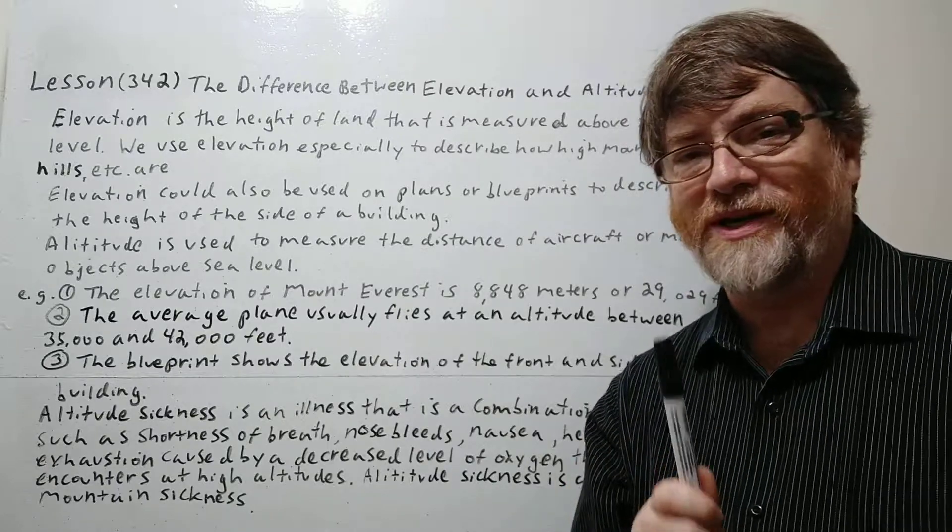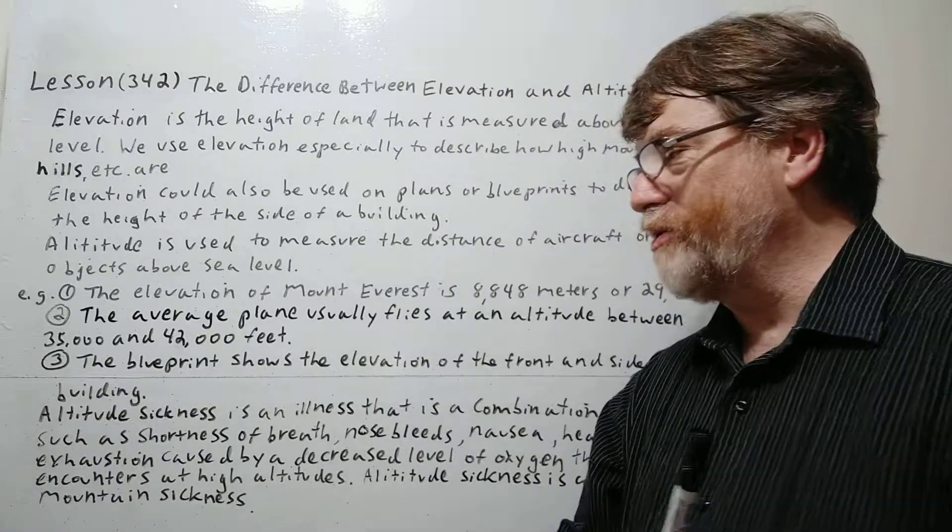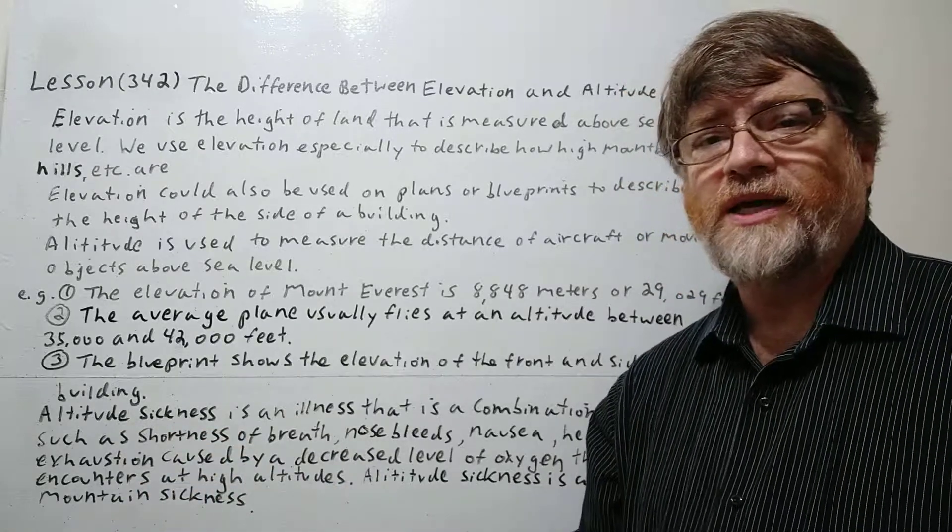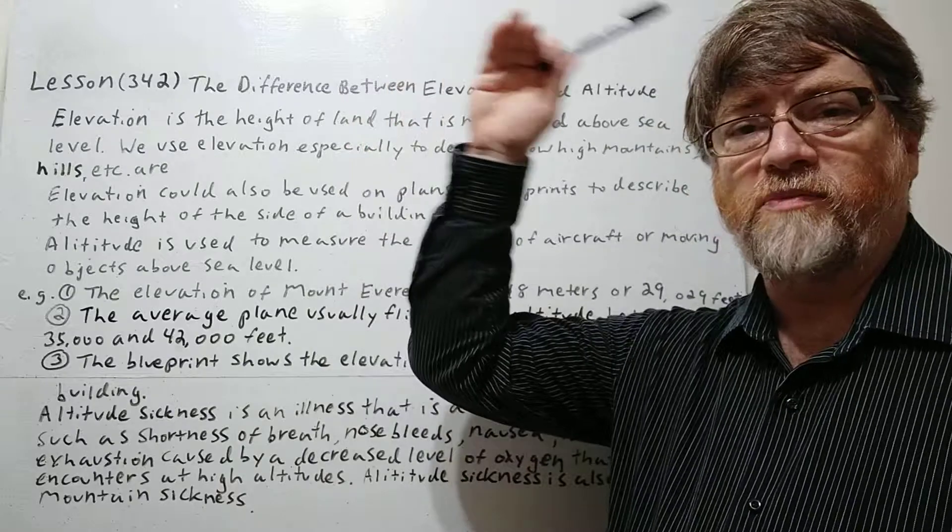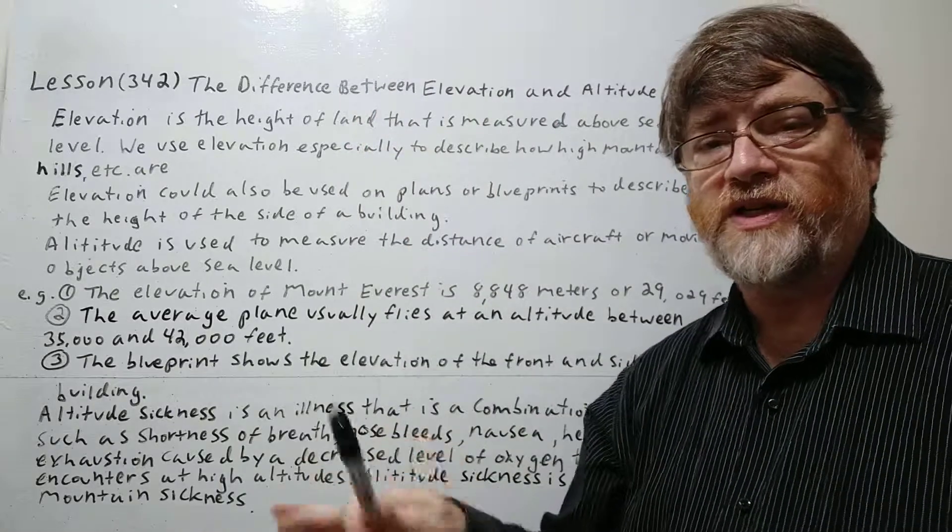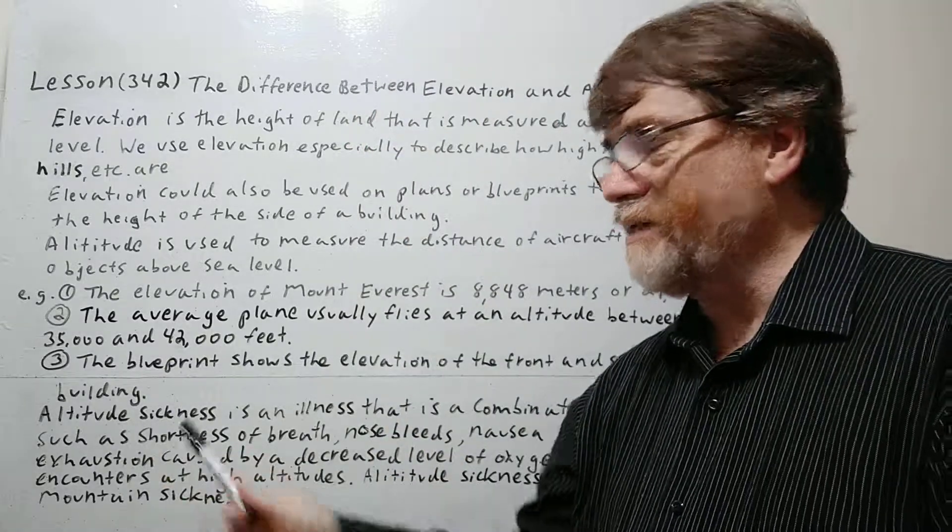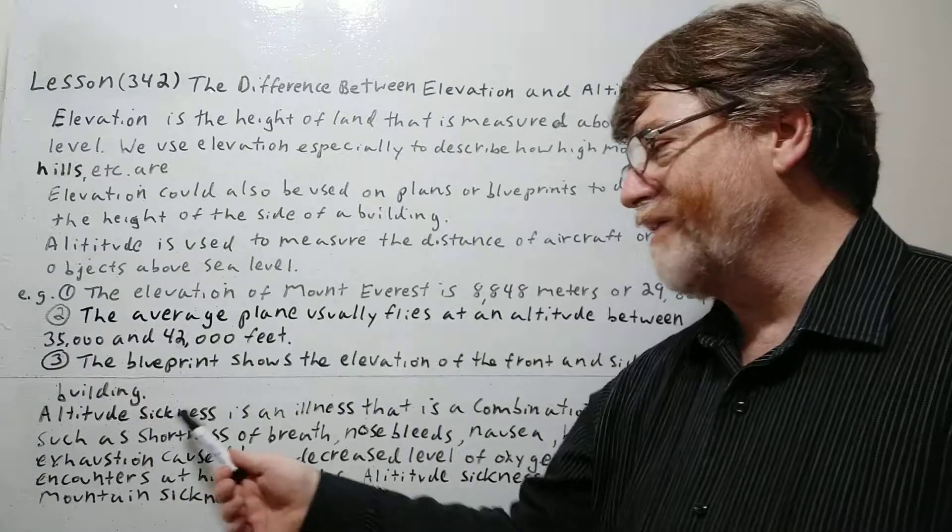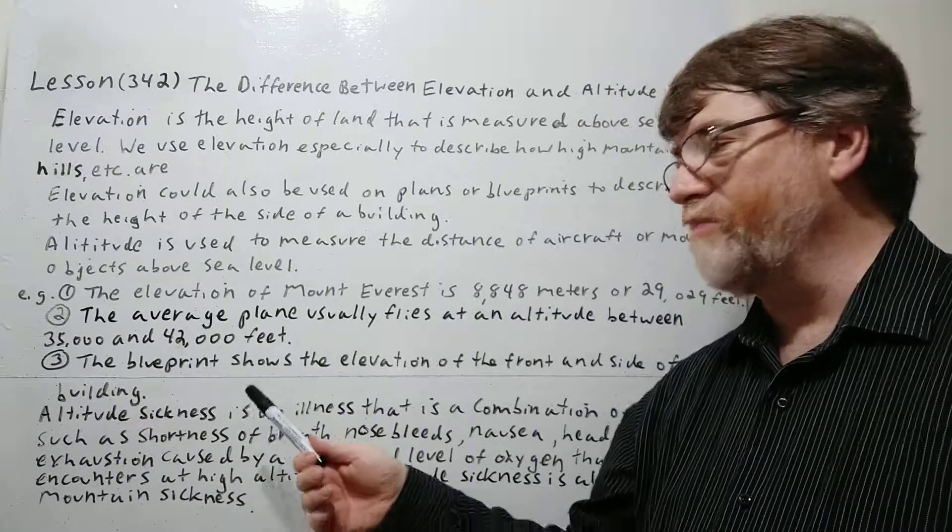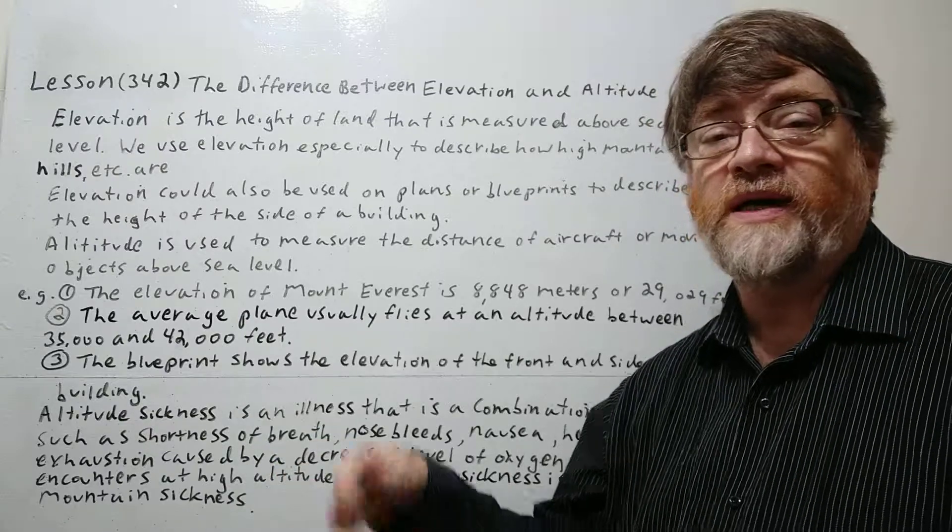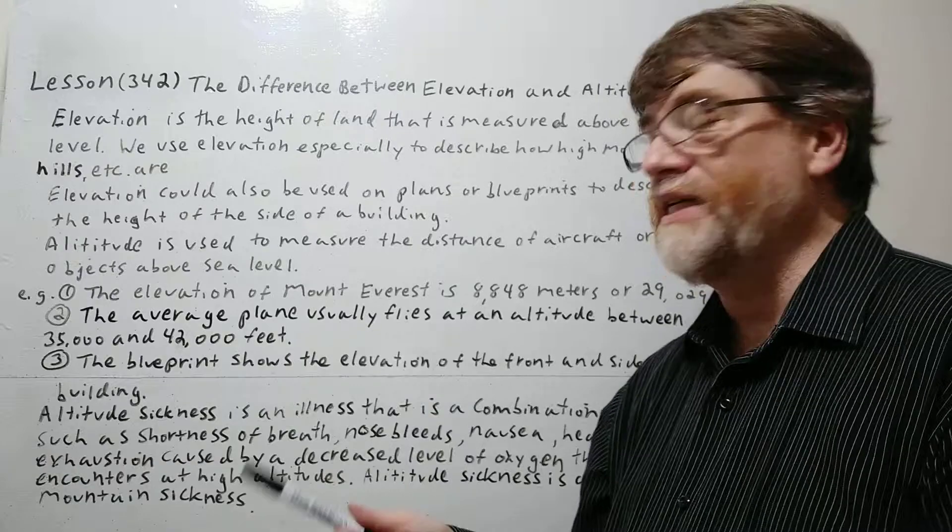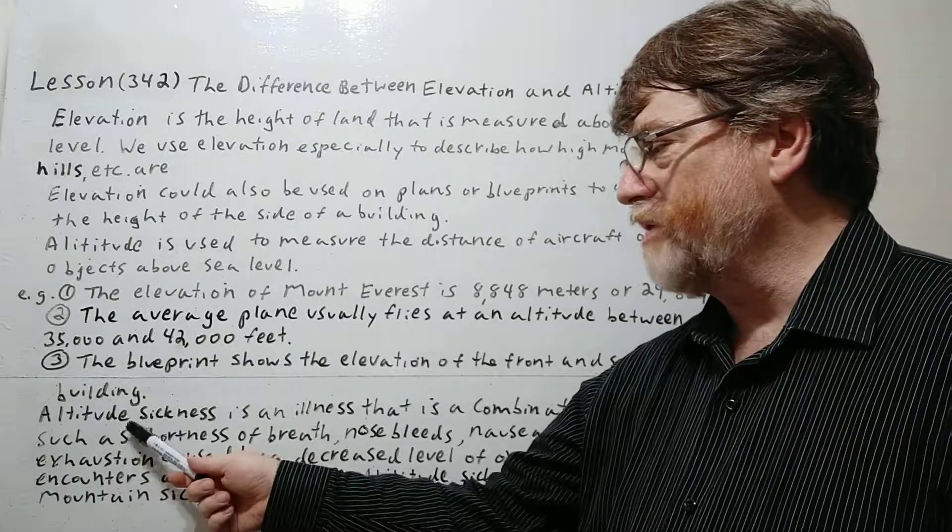Now to make things even a little more confusing though. Sometimes the student might ask, well what about altitude sickness because altitude measures the height of moving objects, planes and elevation does the land. But we use altitude sickness for people. Why don't we say elevation sickness, actually seems to almost make more sense because we are standing on a mountain and really that's the measurement of the mountain above sea level. But let's look here.